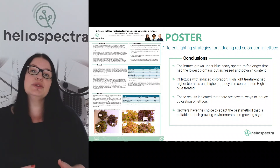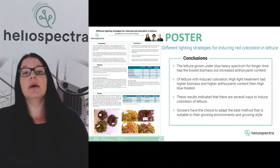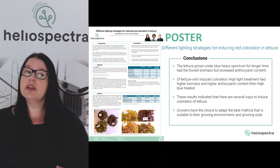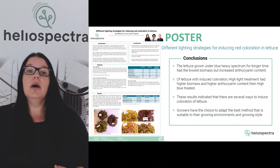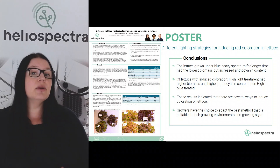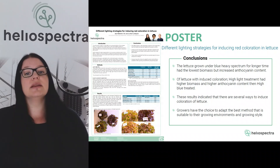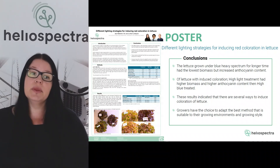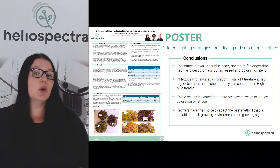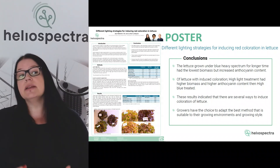In conclusion, lettuce grown under high blue spectrum for a longer period had the lowest biomass but did increase anthocyanin content. Lettuce induced with high light treatment had higher biomass and higher anthocyanin content than those treated with high blue. These results indicate there are several ways to induce red coloration in lettuce, and growers can choose the best method suitable for their growth environment and growing style.